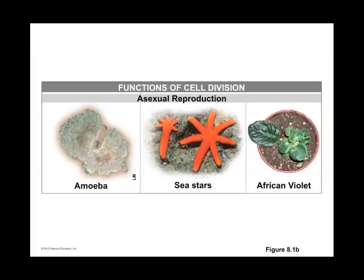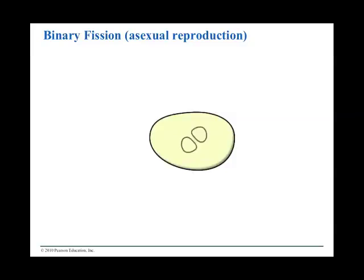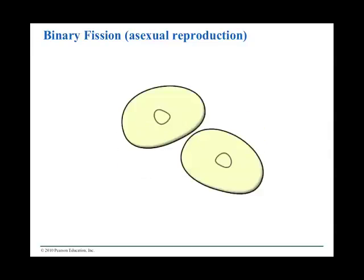In asexual reproduction, one species is involved and no partner. You can see there's an amoeba — when it splits in half, you've got two amoebas. Sea stars, or starfish: when you cut off an arm or a leg, it regenerates an entire new body. African violets also do not need male or female partners. This is what happens during asexual reproduction.